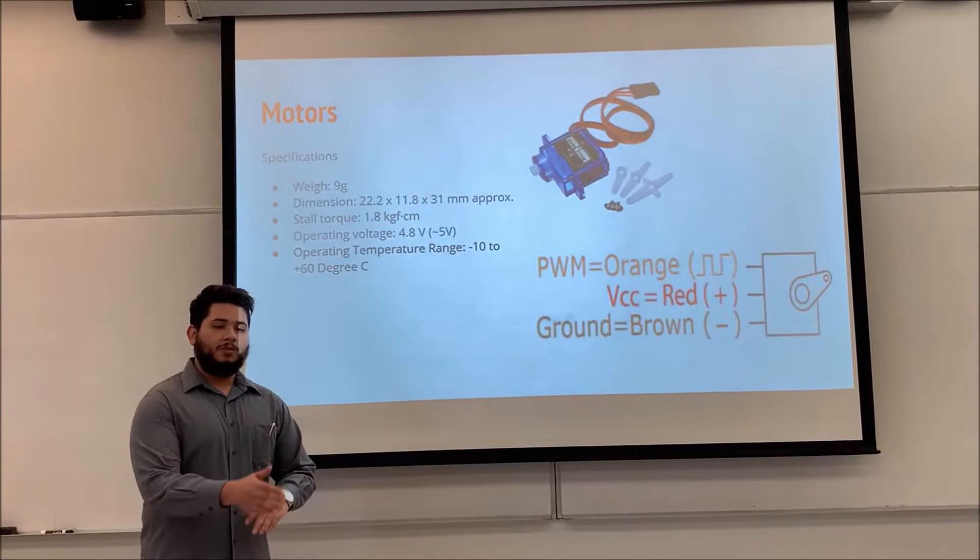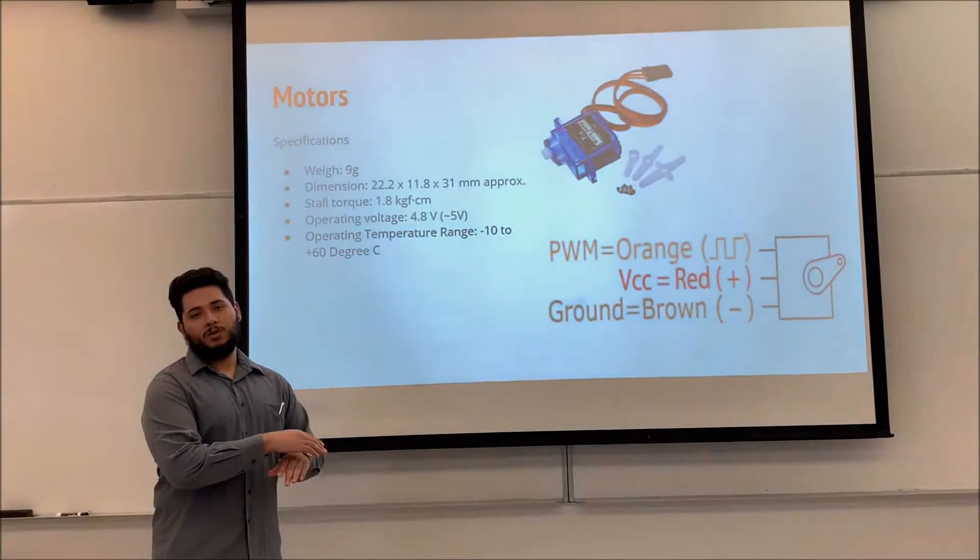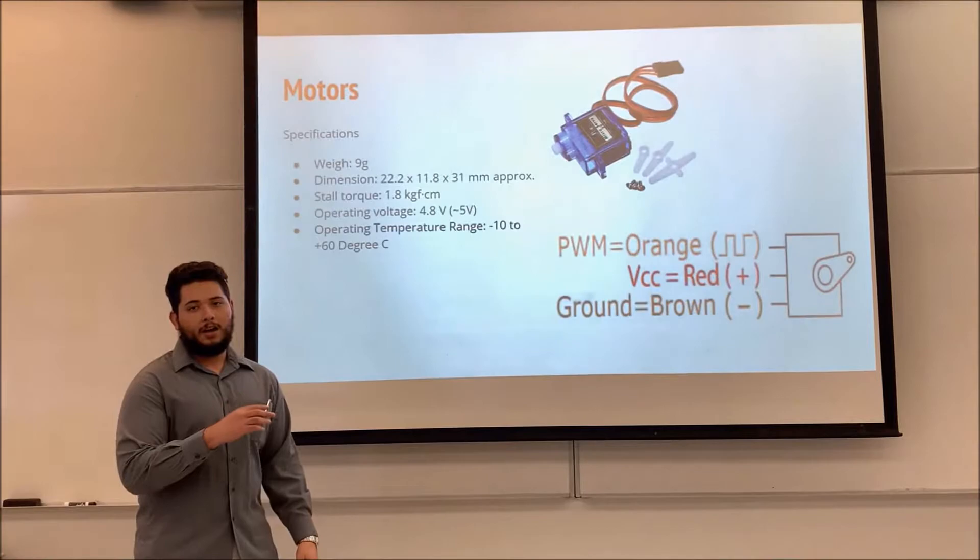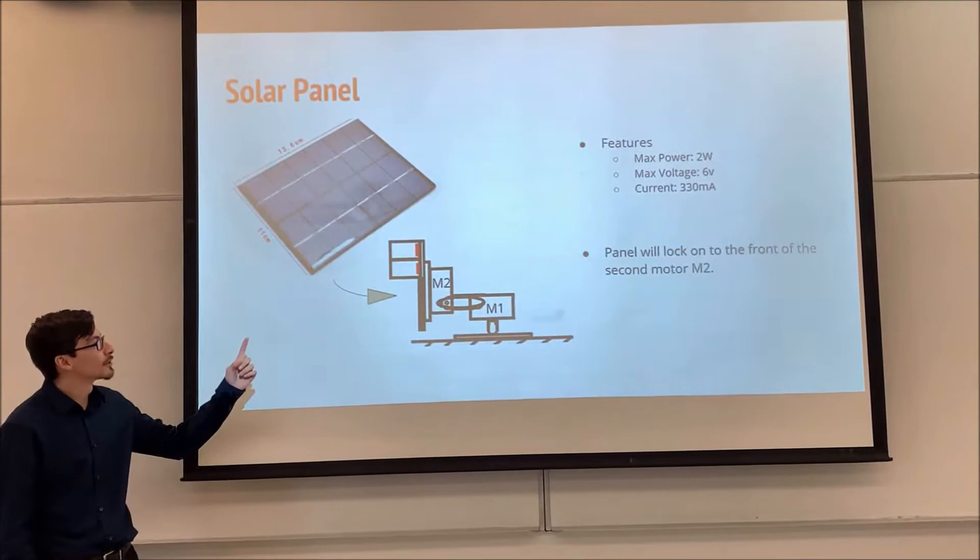And then for the operation for the motor will be 4.8 volts or 5 volts to operate the motor. And then these motors are going to be used. One is going to be used for the base, as my previous David said. One is going to be used for the x-axis. And then the other servo motor is going to be used for the y-axis. So you can have the motor rotating on both axes.